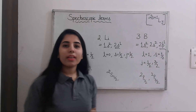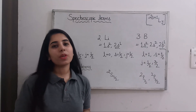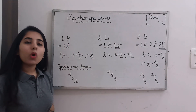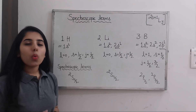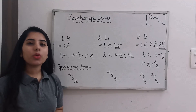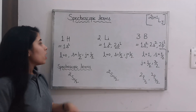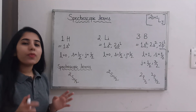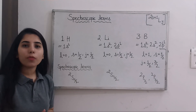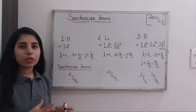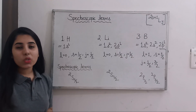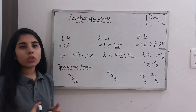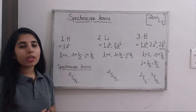Now, what are the steps we need to take to write the spectroscopic terms for any given element? First, we are going to talk about hydrogen. To write spectroscopic terms for hydrogen, first we write its electronic configuration. The electronic configuration for hydrogen is 1s1. If you have any doubt about writing electronic configurations, please go through the basic principles — I hope it will be clear to everyone.